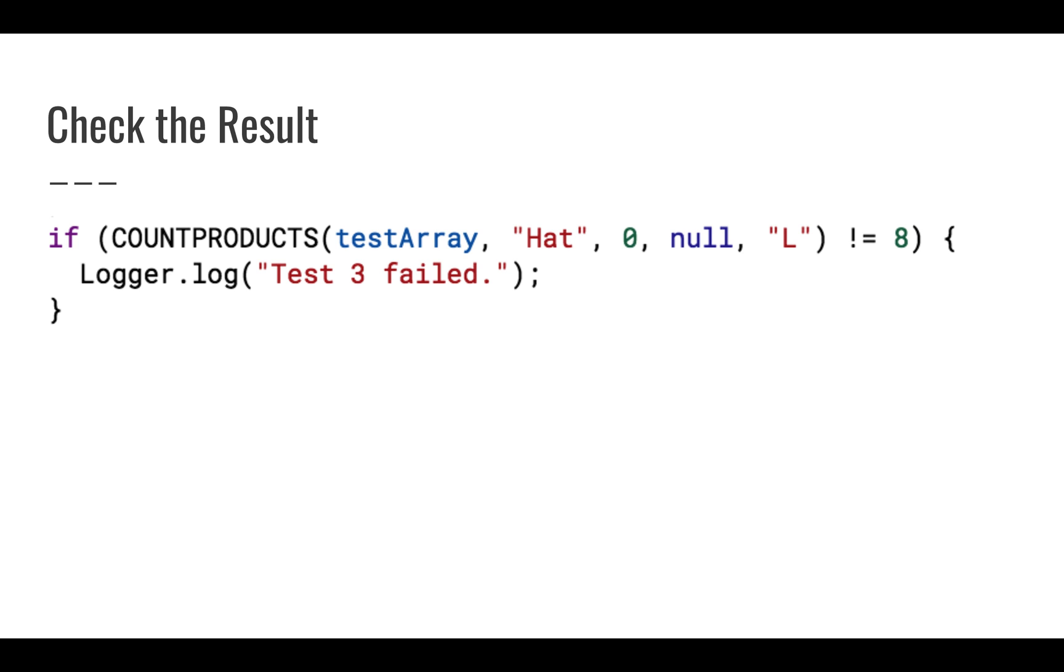And then I can use this to run my function. I can also check the result pretty easily. So I can call my custom function just like any other function in my script. And then I can actually verify that it's going to give me what I want. So if I run this, I'm expecting to get a result of eight. And if it doesn't give me that, then I can just put a message out to my log and say that that failed.